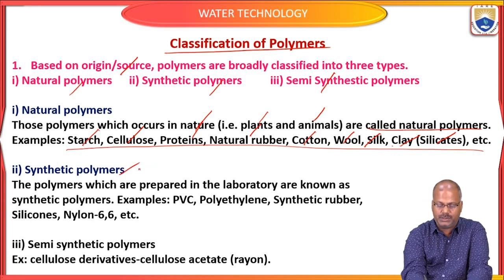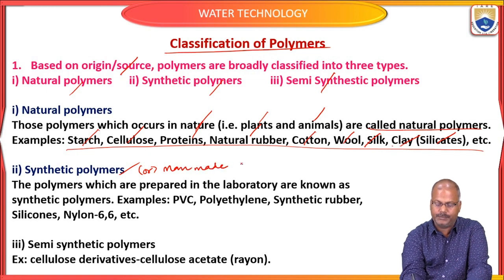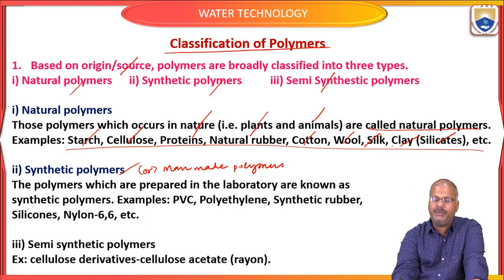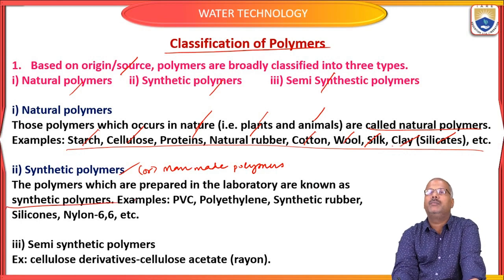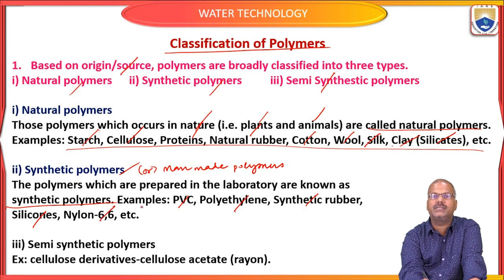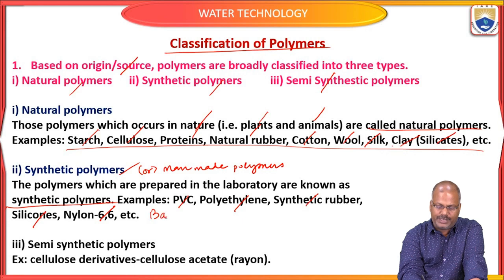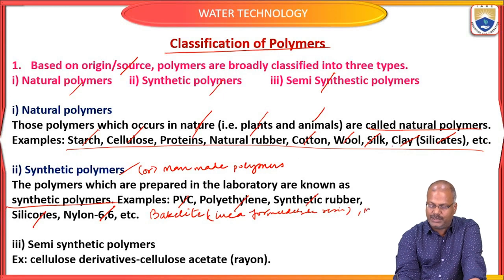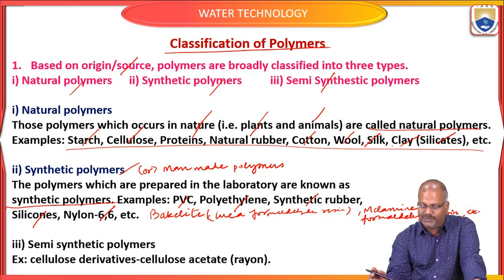Synthetic polymers are also called man-made polymers — those prepared in the laboratory — such as polyvinyl chloride (PVC), polyethylene, synthetic rubber, silicones, nylons, and resins like urea-formaldehyde and melamine-formaldehyde. This is not an exhaustive list; there are many more.